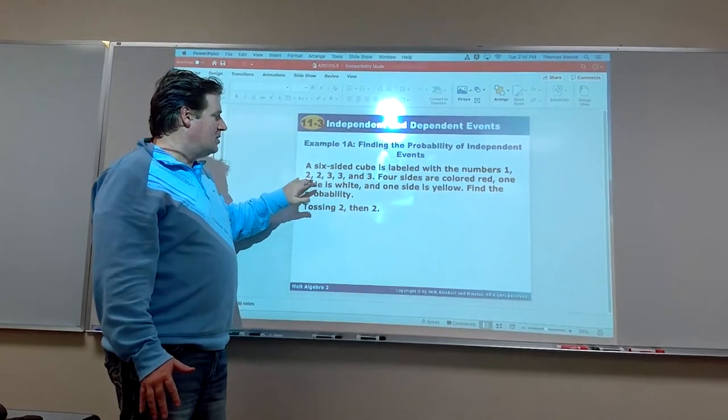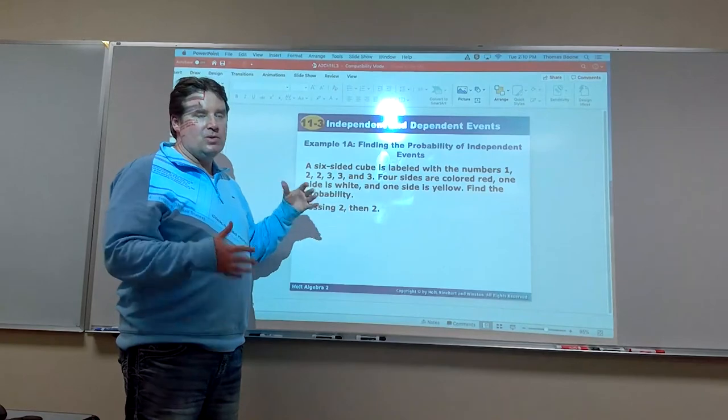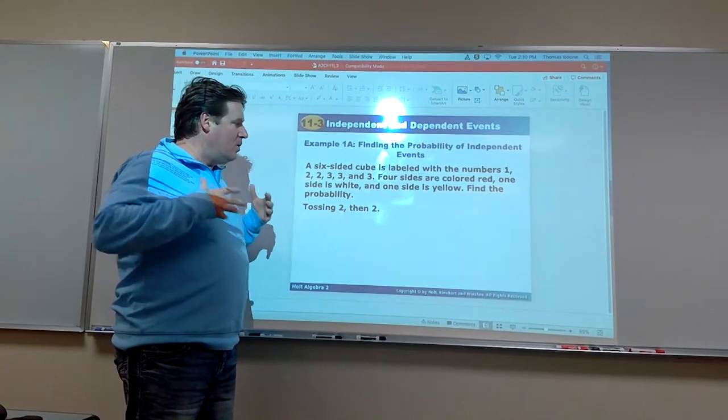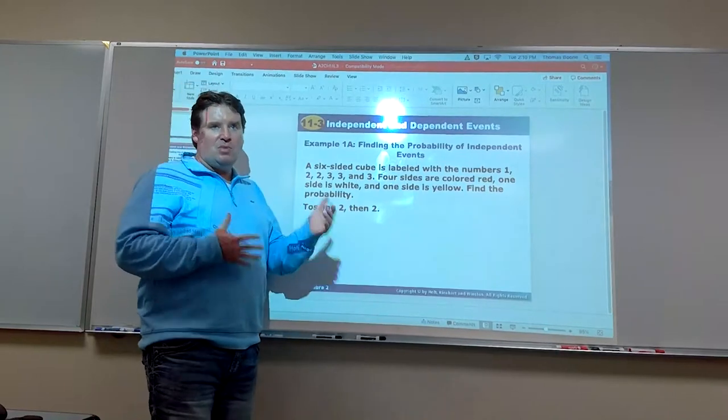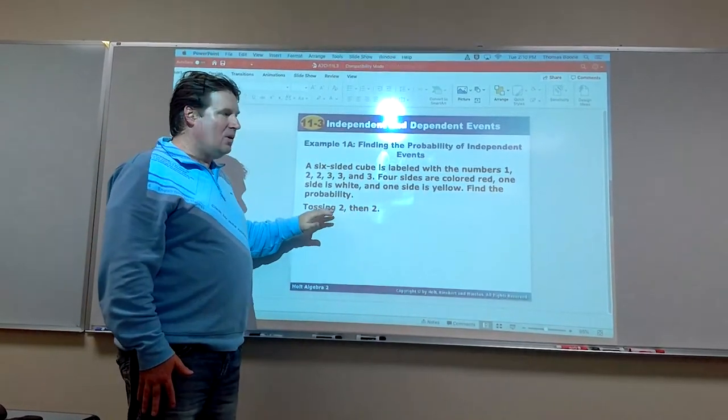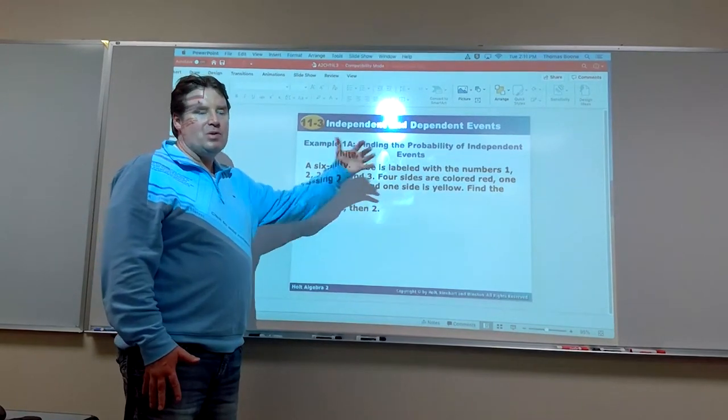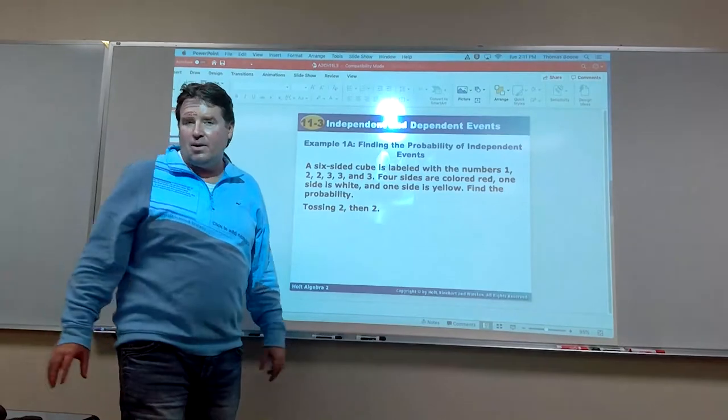Well, the probability of tossing a 2, as we know before, is there's two favorable outcomes out of six. So 2/6 or 1/3. Now when I pick up the die again, just because what I rolled on the first doesn't change the probability. It's still the same. So we're going to have 1/3 again. So what we're going to do is take 1/3 times 1/3. There's a 1/9 probability of both events. Just multiplying together is what you do.